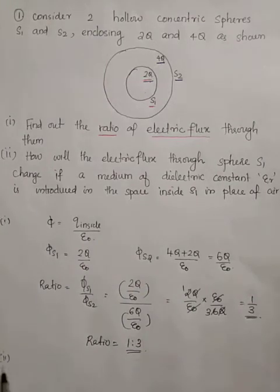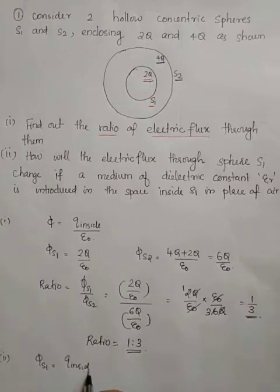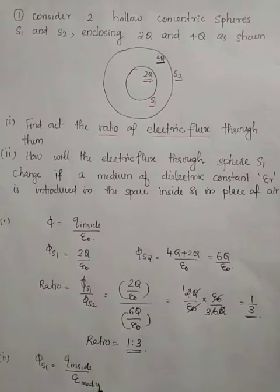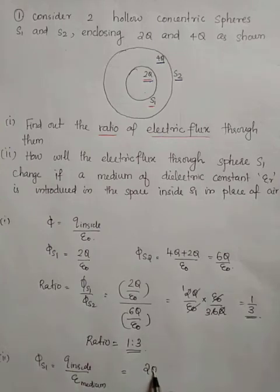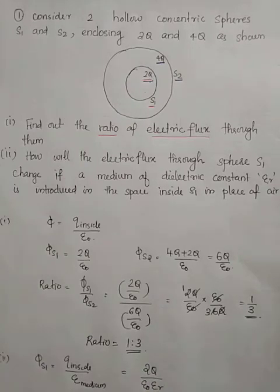Flux through S1 is equal to Q inside by epsilon, where epsilon is the permittivity of the medium. Since Q inside equals 2Q and the permittivity of the medium equals epsilon zero into epsilon r, the flux through S1 becomes 2Q divided by epsilon zero into epsilon r.